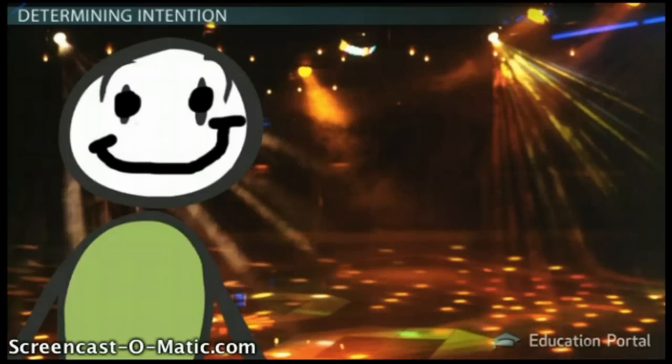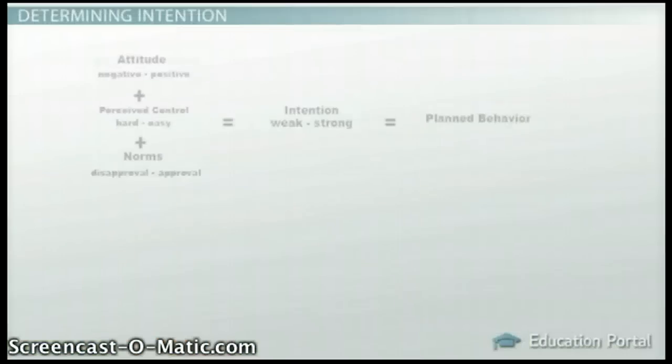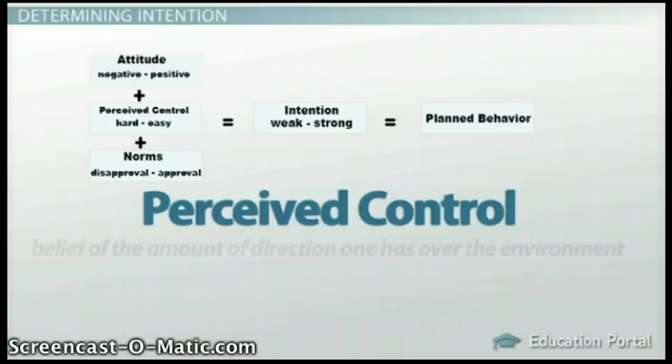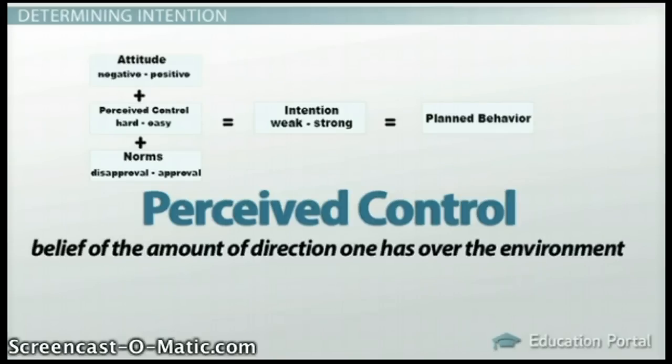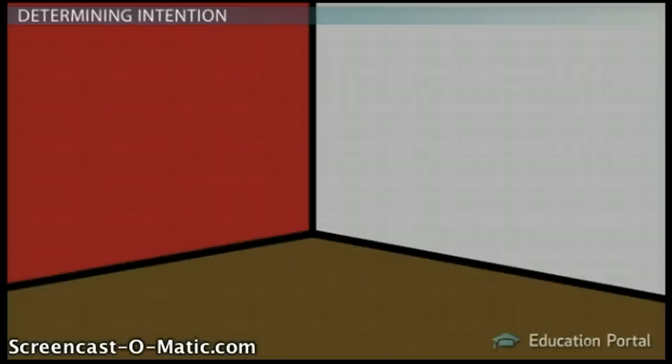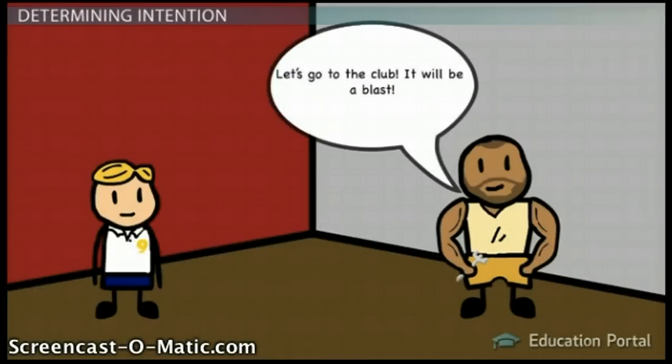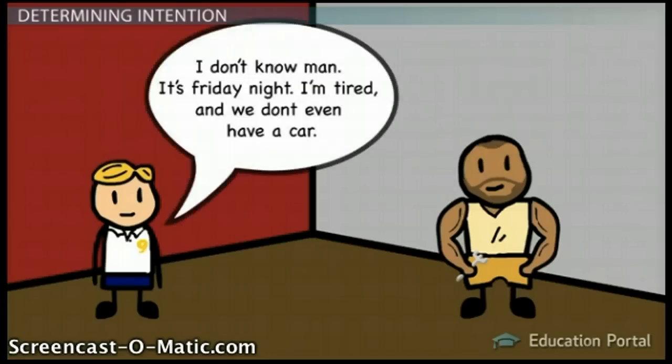Second is one's perceived control of the behavior. Perceived control refers to the belief of the amount of direction one has over the environment. It suggests if the task will be easy or difficult to accomplish. How easy would it be to go to the club? How much effort is involved? Do you have transportation? Will there be traffic? Is it far away?